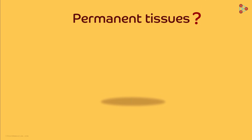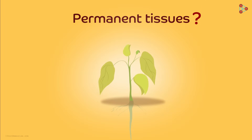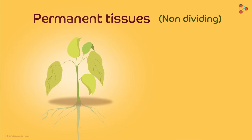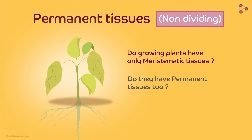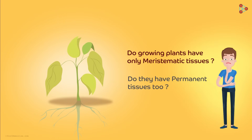Do plants also have permanent tissues right when they germinate from seeds? Permanent tissues are composed of cells that have lost the power of dividing. The plant is growing and thus must have only meristematic tissues. Permanent tissues would mean tissues that are already present and those that do not divide. So initially, if the plant does not have permanent tissues, where do they come into the picture?